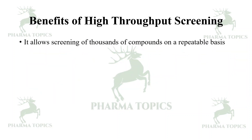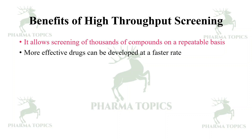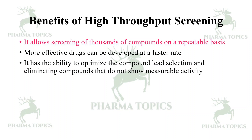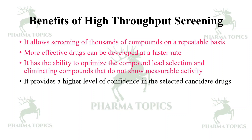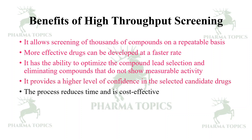HTS allows screening of thousands of compounds on a repeatable basis. The most effective drugs can be developed at a faster rate using HTS. It has the ability to optimize compound lead selection by eliminating compounds that do not show measurable activity, provides a higher level of confidence in the selected candidates, and reduces time while being cost effective.